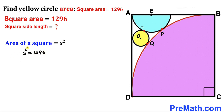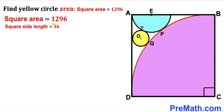Let's undo this square by taking the square root on both sides. The square and square root cancel, so our side length S turns out to be 36. Thus the side length of square ABCD is 36, meaning all side lengths of this square are 36 across the board.